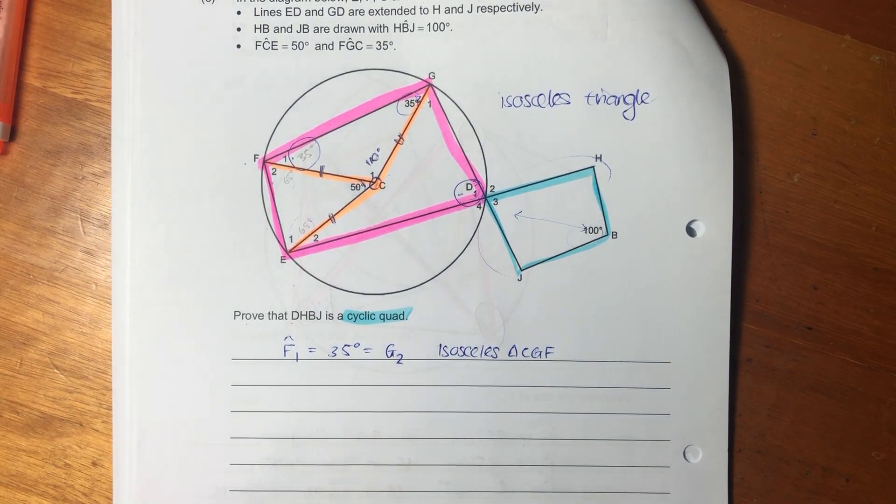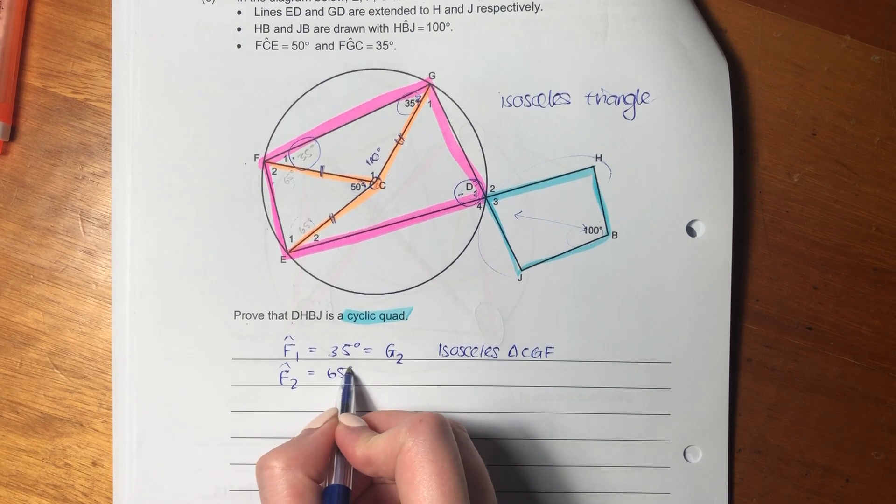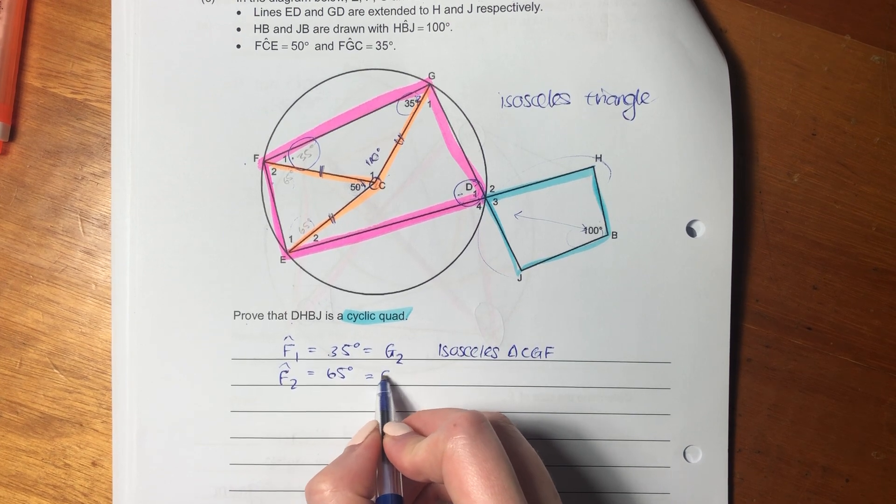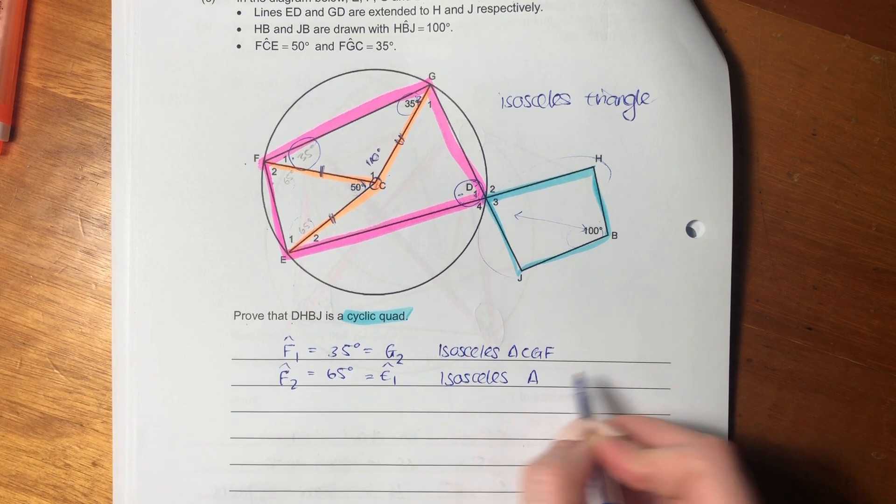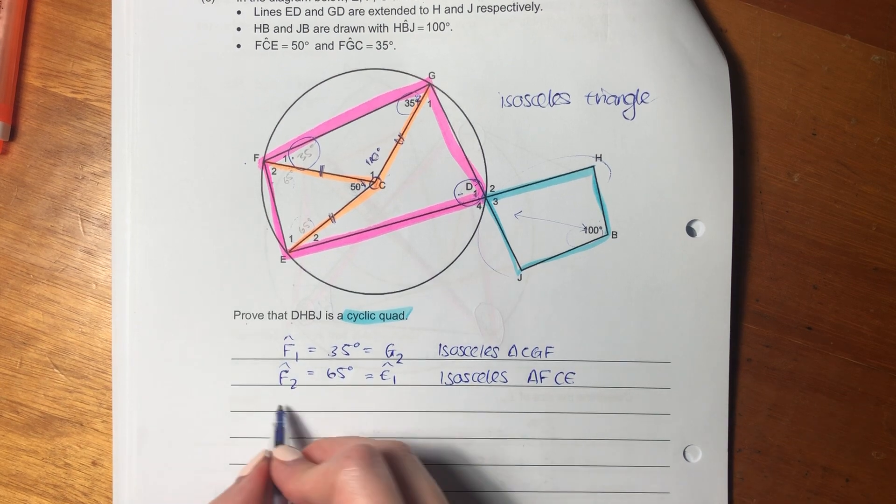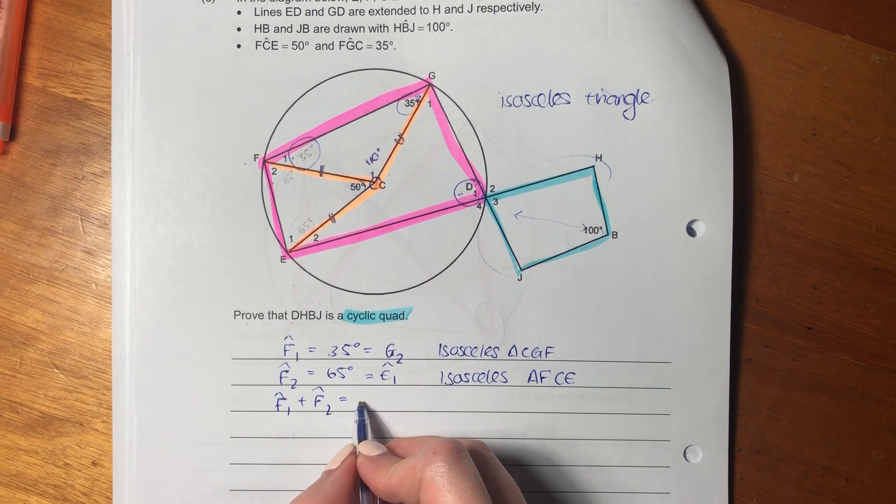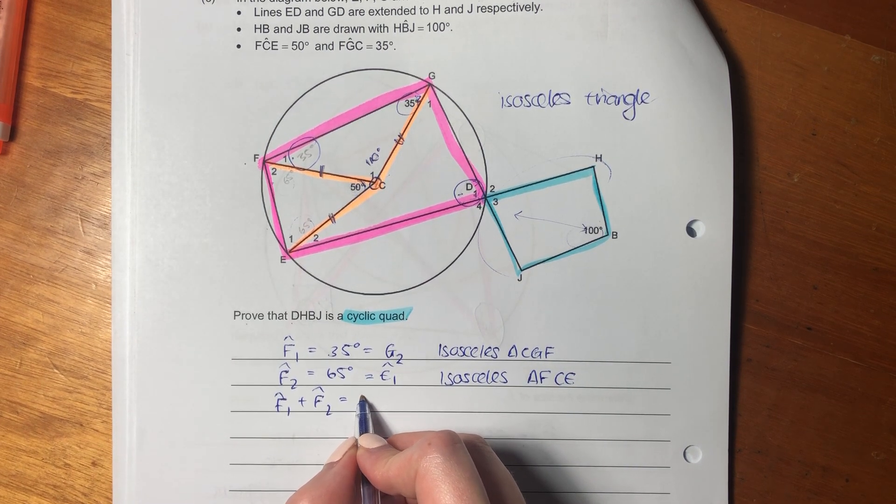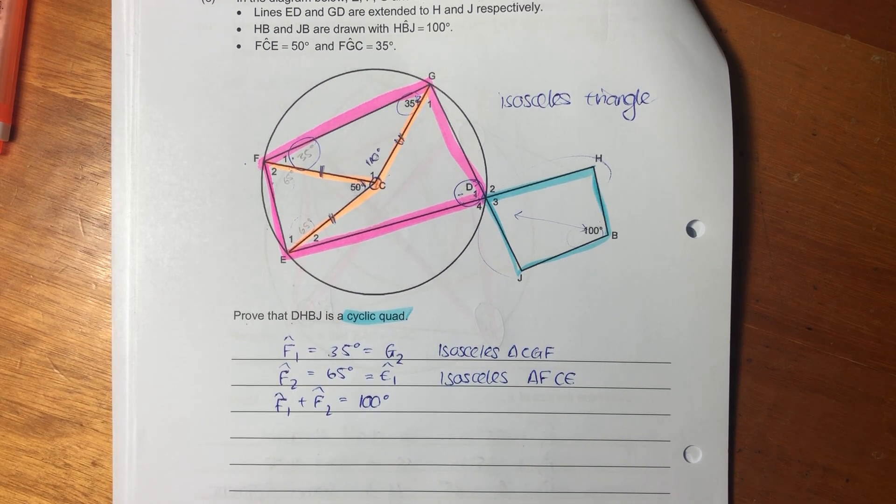And then we can say this is because of the isosceles triangle CGF. So that also equals G2. Now we can say F2 equals 65 degrees, which equals E1, again, because of isosceles triangle FCE. So therefore, we say F1 plus F2 equals 100.